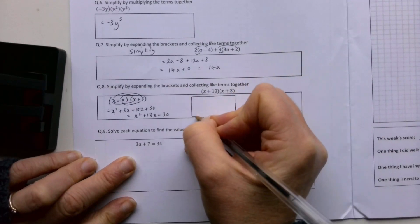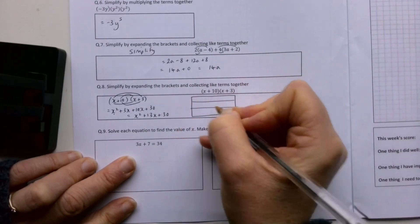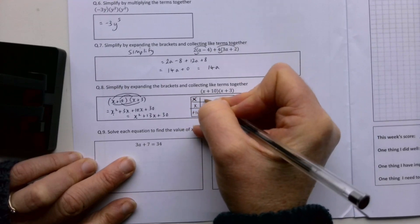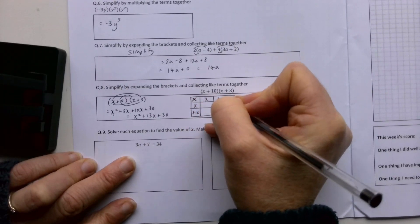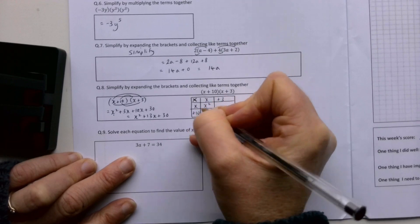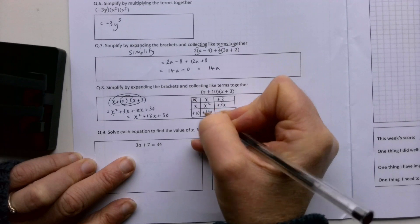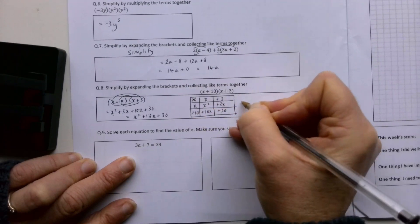Or you might prefer to do an array. Let's set it up: x plus 10, and then x plus 3. So x by x is x squared, x by 3 is 3x, 10 by x is 10x, 10 by 3 is 30. So again, x squared, these two go together, so plus 13x plus 30.